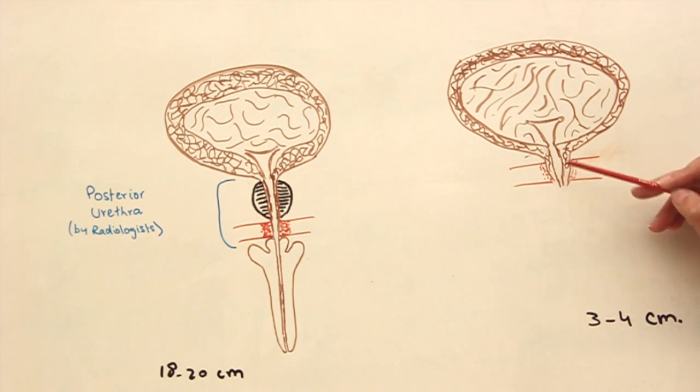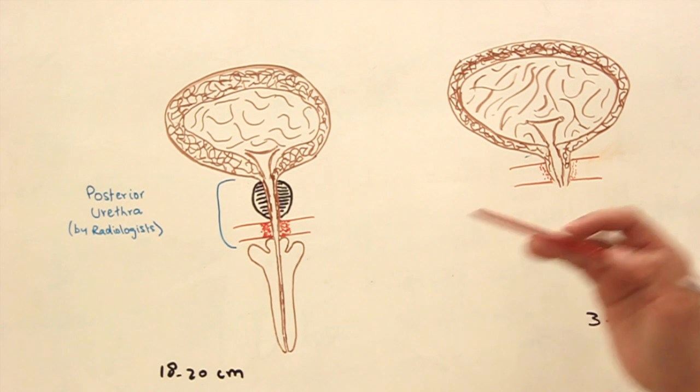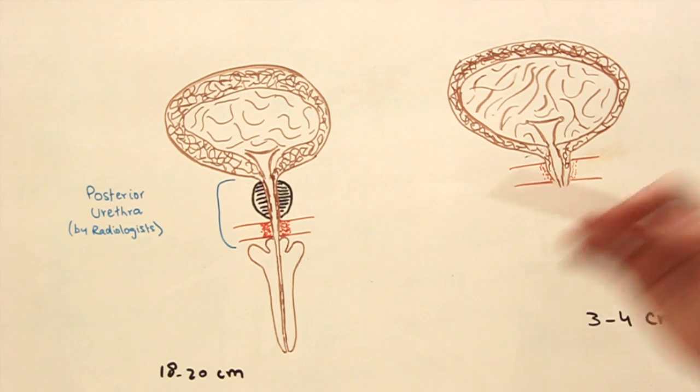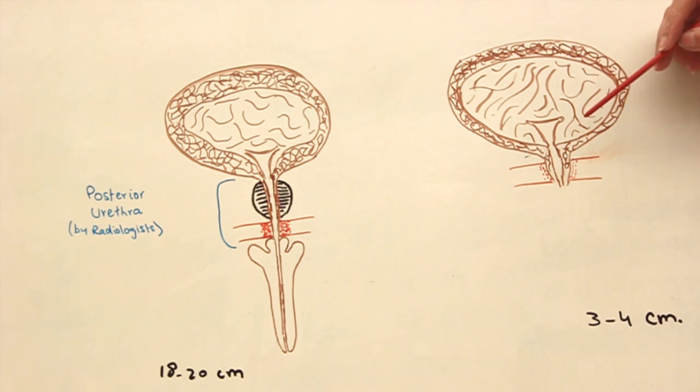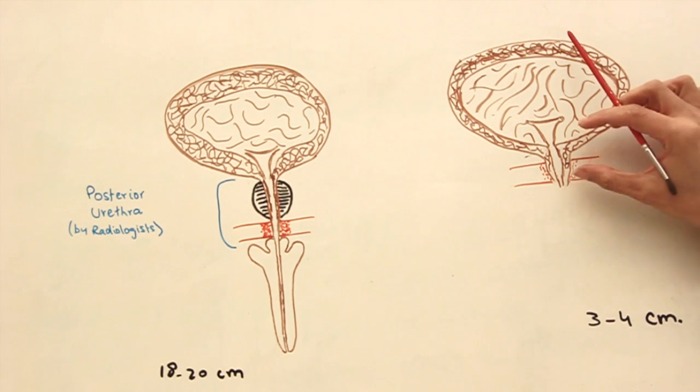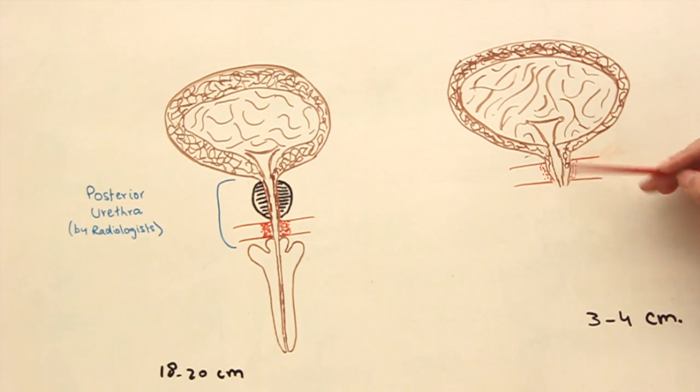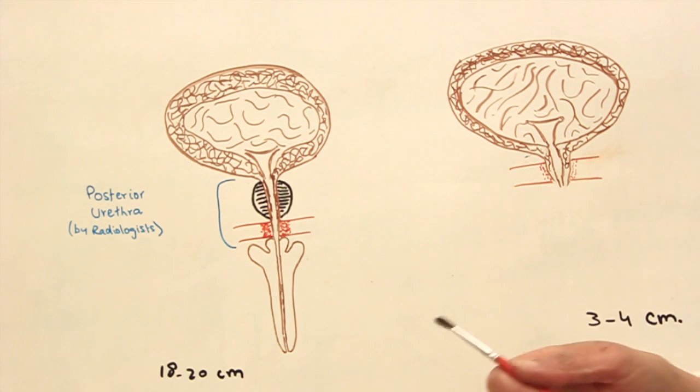I was mentioning in the beginning that there are many chances of damage of female urethra, not accidentally as a physical accident, but during surgeries. Sometimes the urethra gets damaged in the process of catheterization because it's a small tube, not that extended, and closely related to the vagina. So the anterior wall gets damaged frequently in females.